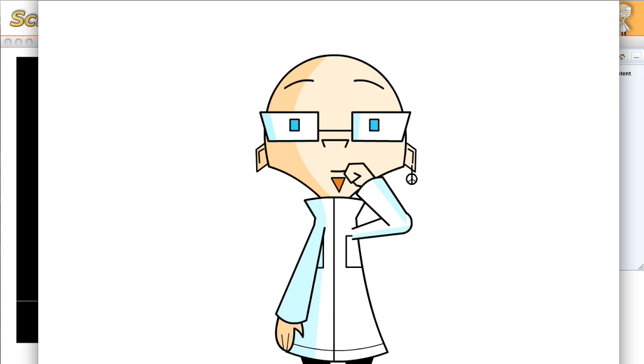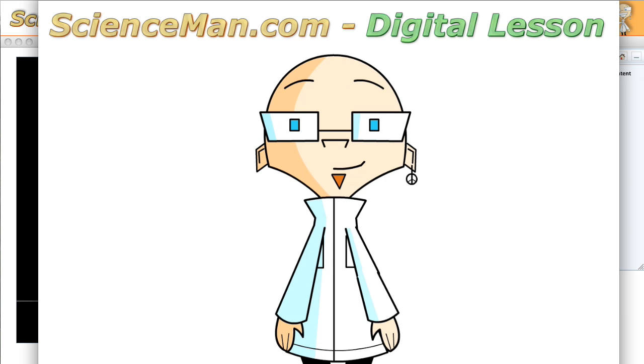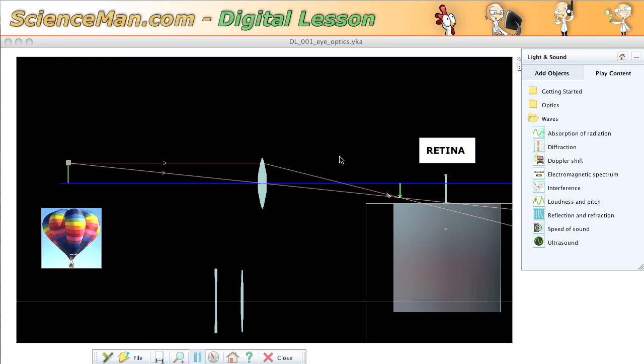Hello and welcome to another ScienceMan digital lesson. Today we're going to look at an interesting problem with human vision and that's nearsightedness. Now to understand it we need to know a little bit about the optics of the eye.